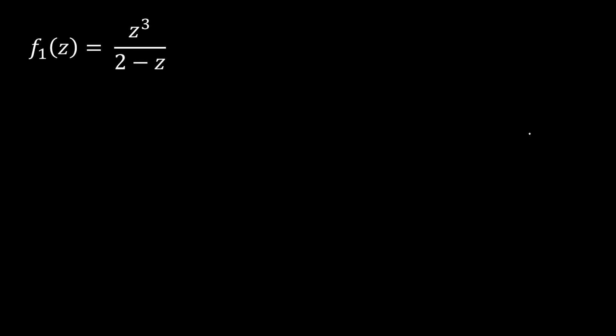With our first function, we have z cubed on 2 minus z. Pretty clearly, there's a singularity at z equals 2. So, what happens if we try to expand this function about the singularity? Well, we get the following. So, this is the Laurent series of our function. If you need a refresher on Laurent series, I did a video on this previously, and I'll link it in the description down below.